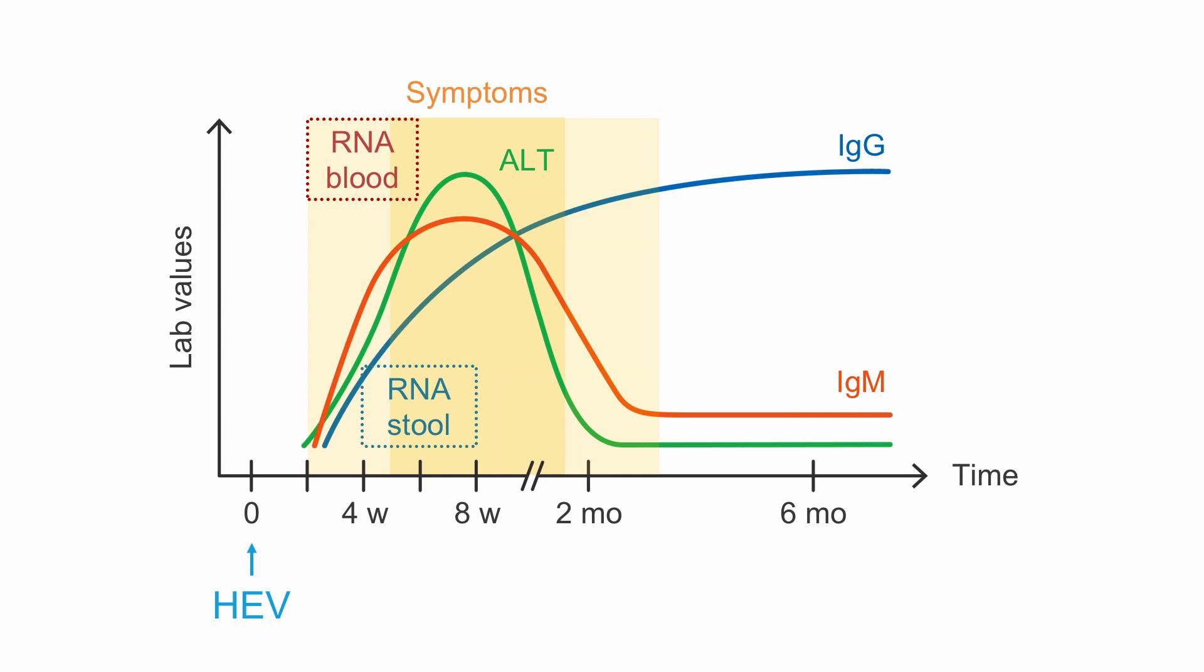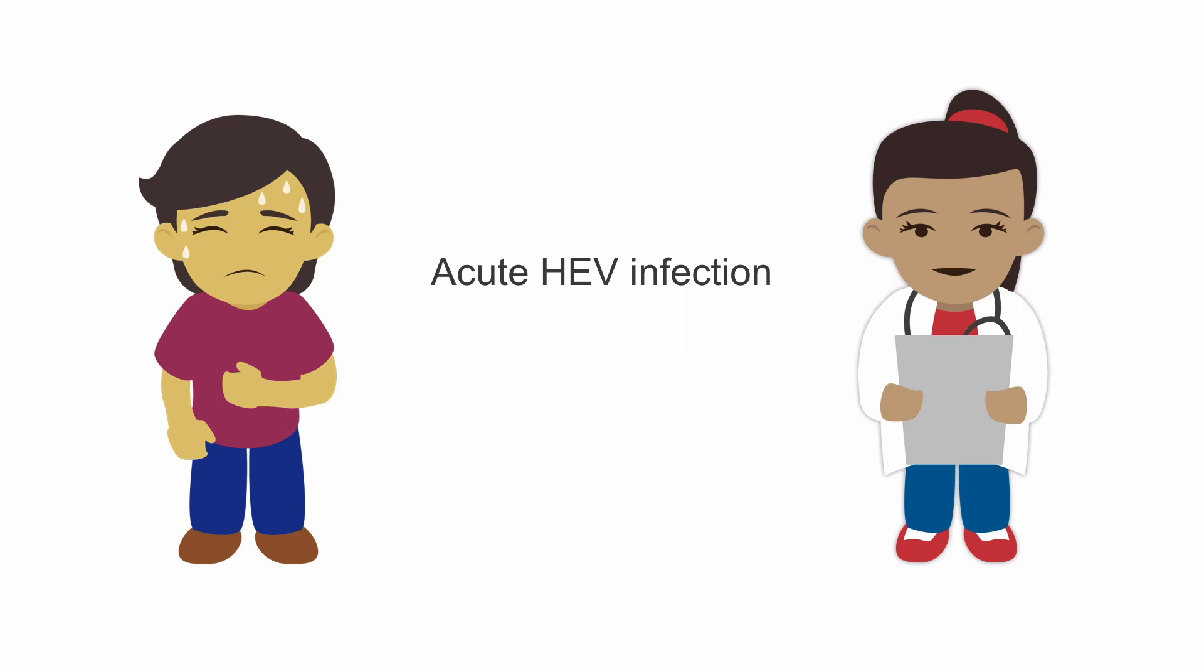Anti-HEV IgM and IgG are both positive and we could detect RNA in Hannah's stool. Based on these results, we can conclude that Hannah is most likely in the early phase after infection. So Hannah is suffering from an acute hepatitis E infection.